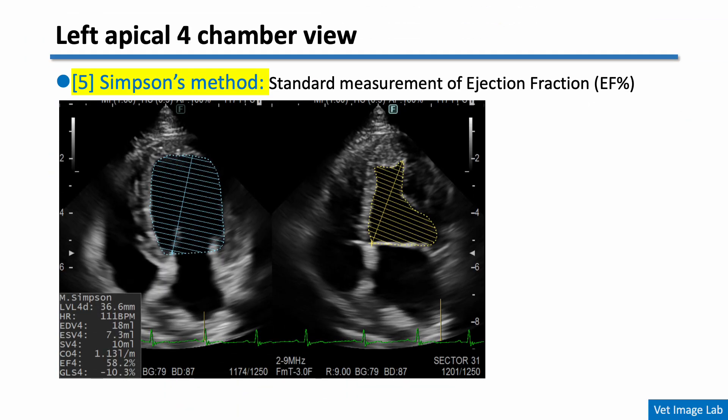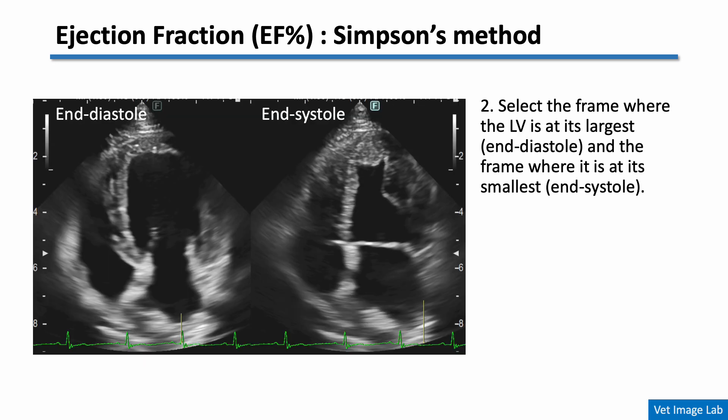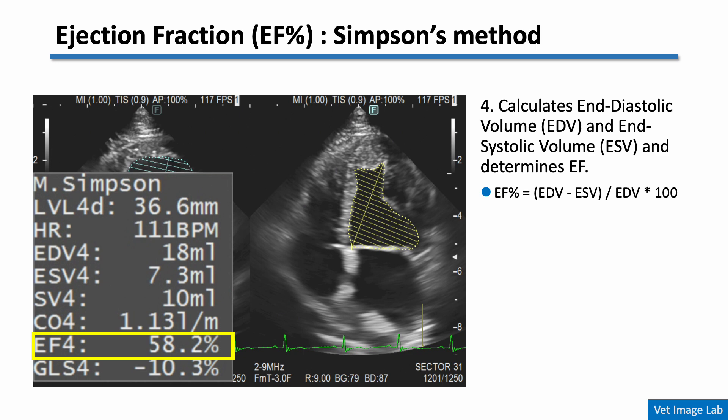The final parameter to check in the apical four-chamber view is ejection fraction, evaluated using Simpson's method. This provides a reliable assessment of systolic function by calculating the volume change of the left ventricle, and should be interpreted together with M-mode measurements from the right parasternal view. Obtain the apical four-chamber view in B-mode, then select the frame where the left ventricle appears largest (end diastole) and the frame where it's smallest (end systole). Trace the left ventricular endocardial border from the mitral annulus to the apex, avoiding the papillary muscles. The ejection fraction value is then calculated automatically from end diastolic and end systolic volumes.